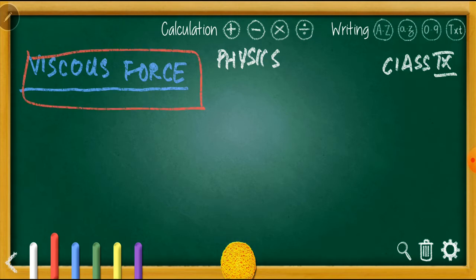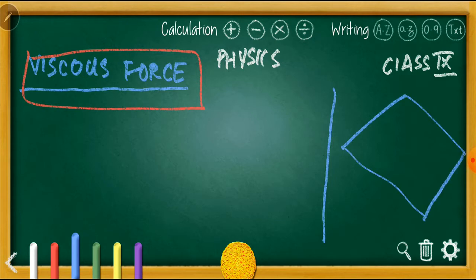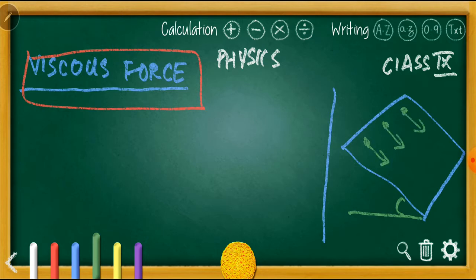The topic we are going to discuss today is viscous force. The topic is explained in the chapter with a small activity. You need to take a glass plate, place one drop of water, one drop of honey, and one drop of kerosene on it. Then keep the plate slanted or on a slope. These three fluids will start to move.